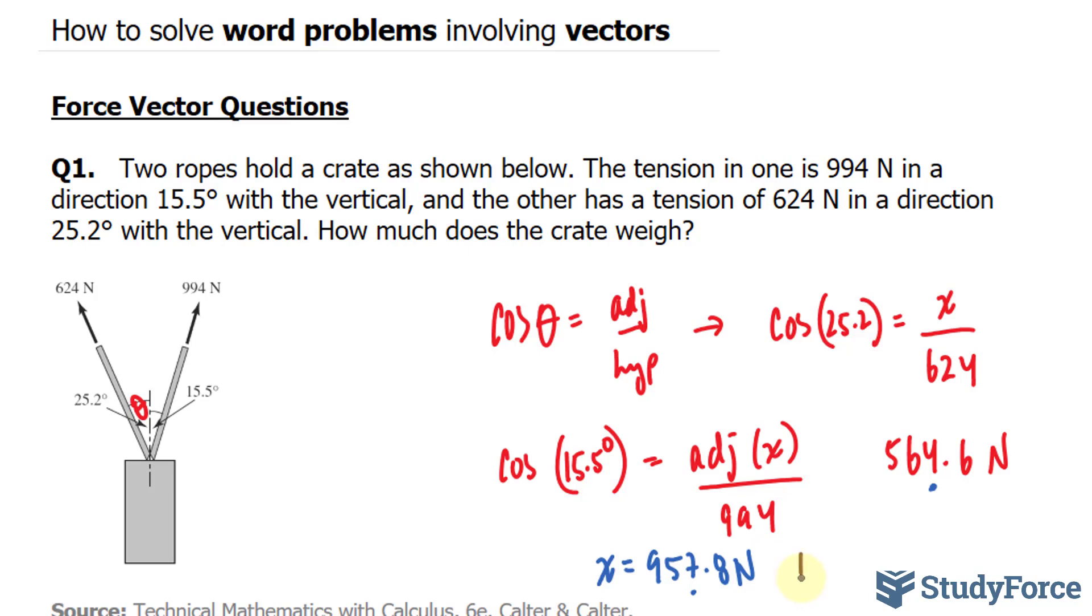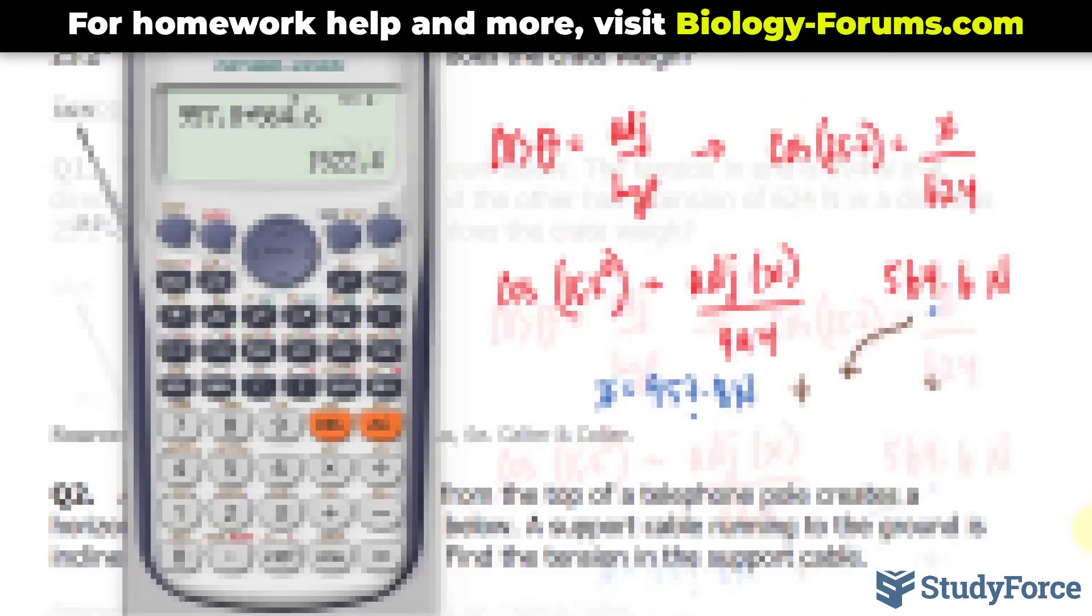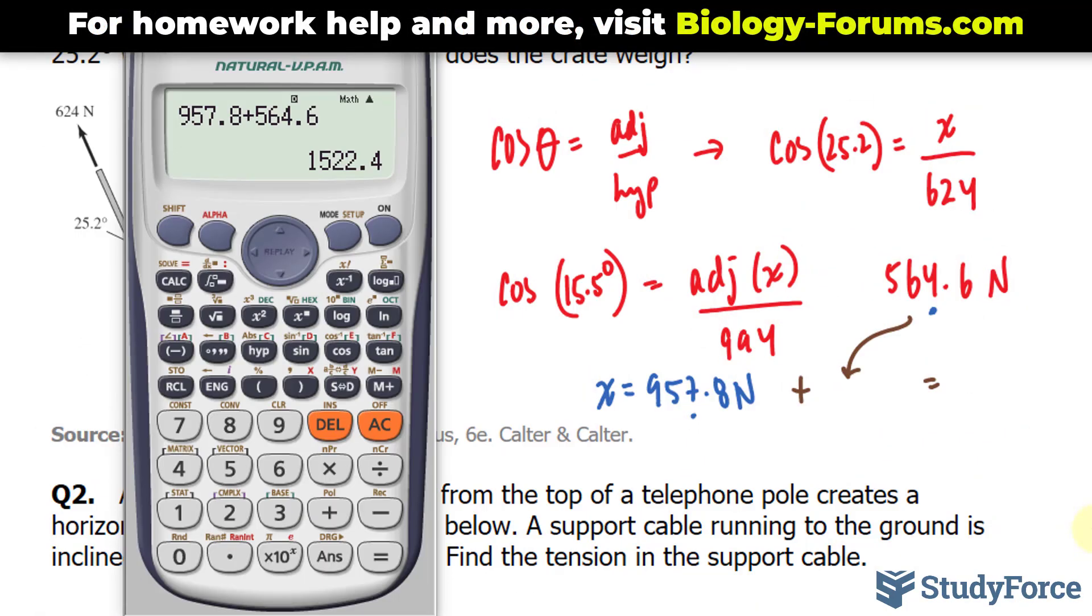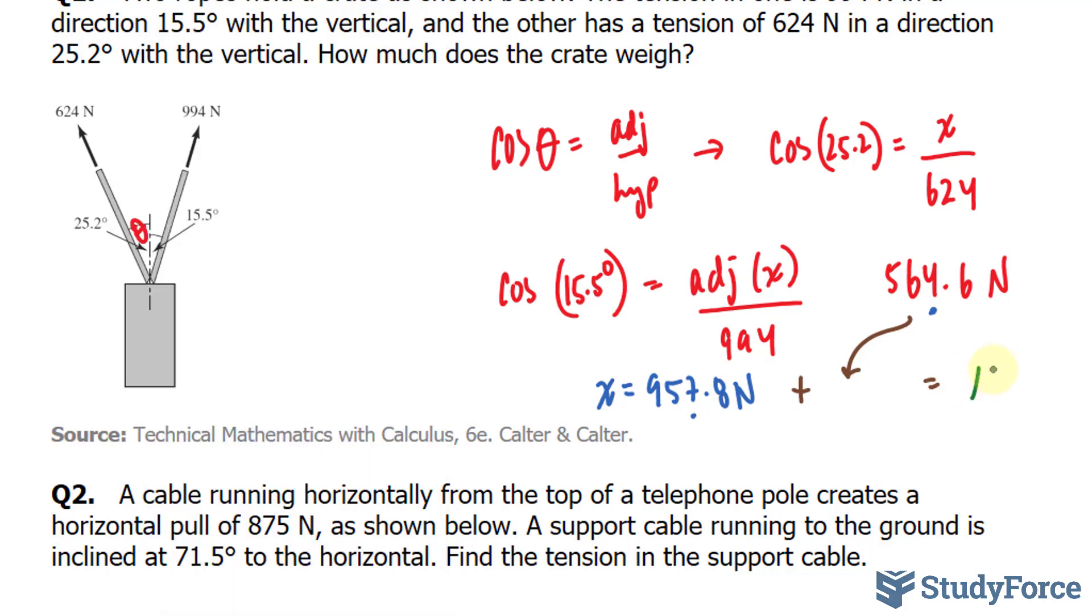Now I add these numbers up. So I add this number to this number. We have 957.8 plus 564.6. We end up with 1522.4. But of course, this needs to be to three significant figures. So everything after this first two is insignificant. And since this two is less than five, this two stays the way it is. We have 1520 Newtons.